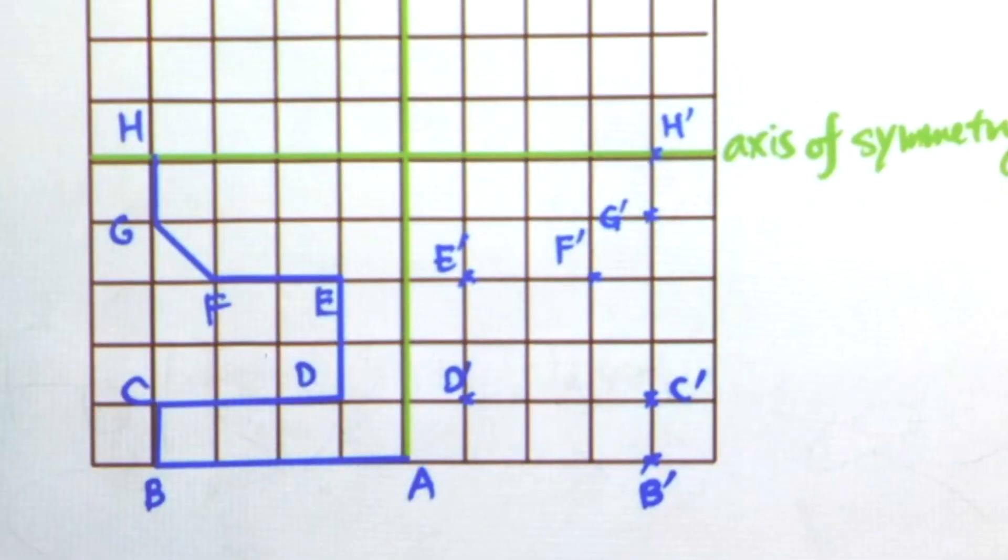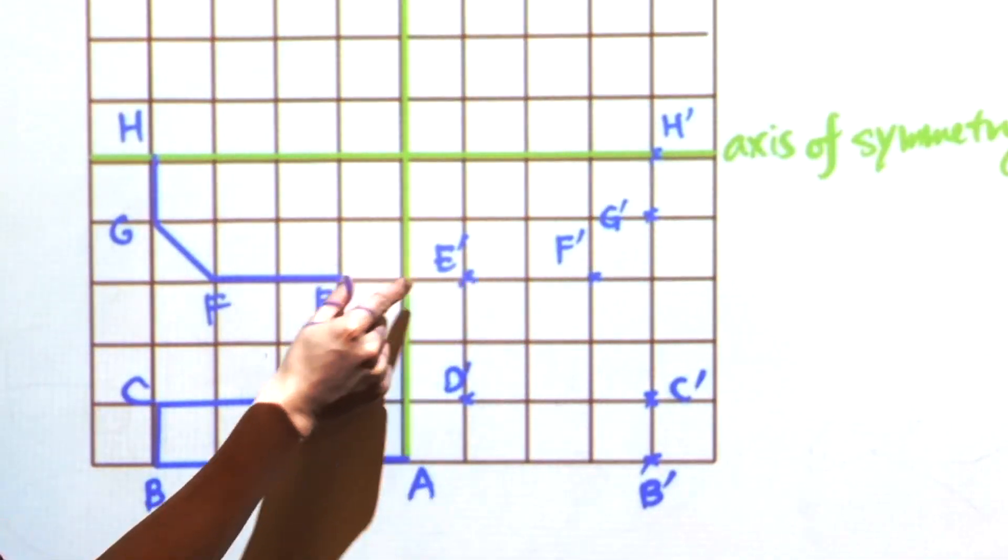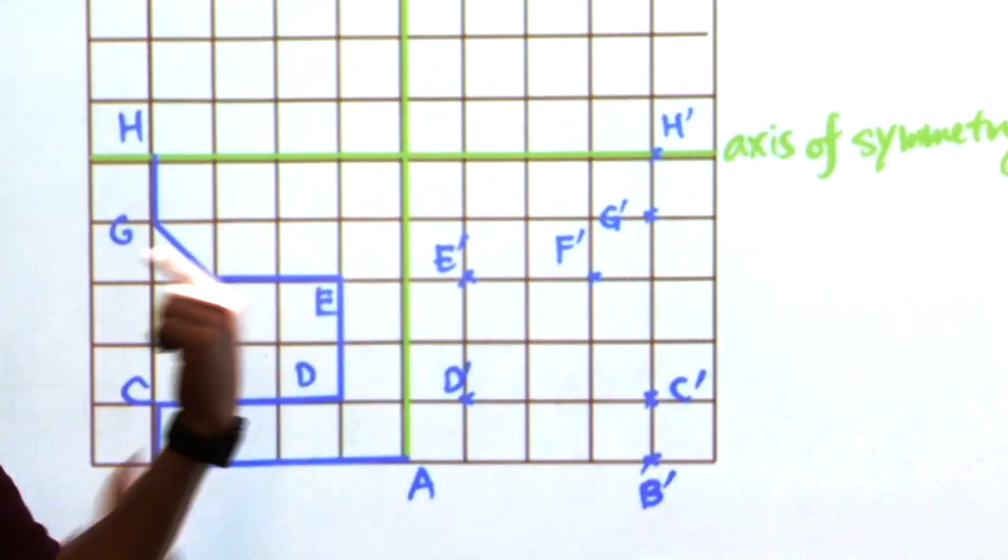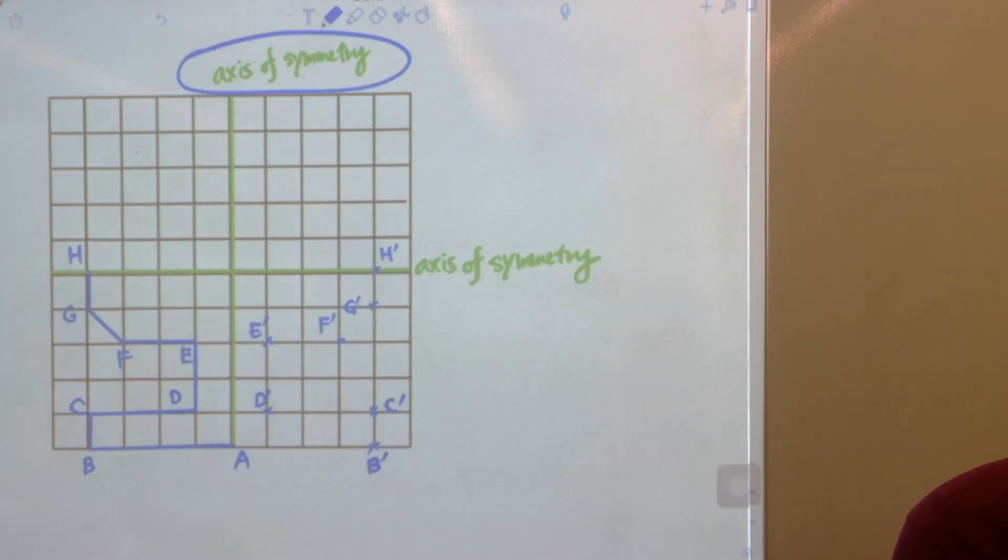So the main point is, these two horizontal distances, these two distances from the mirror, they have to be the same. Finally, we connect all the dots together.